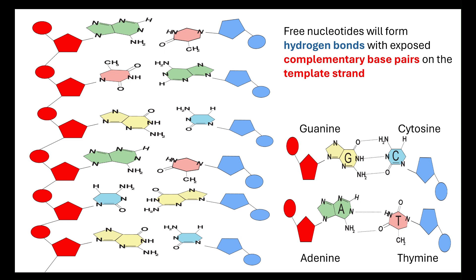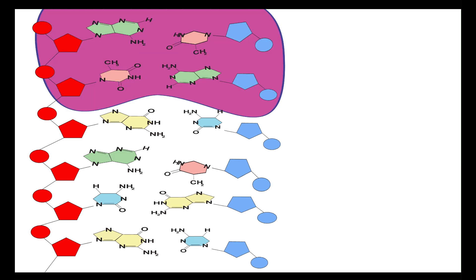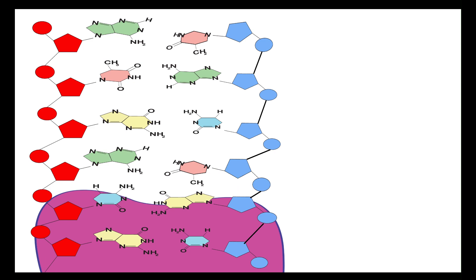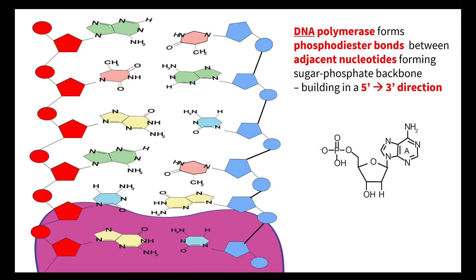Once the complementary base pairs have aligned, what then needs to happen is our DNA polymerase will form phosphodiester bonds between the adjacent nucleotides. That's what forms your sugar phosphate backbone. The DNA polymerase can only build in a 5' to 3' direction.